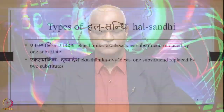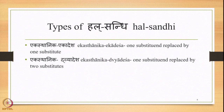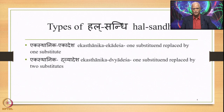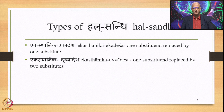Hal Sandhi is a Sandhi that comes in place of a Hal, and Hal is a Consonant. We classified Hal Sandhi into two broad classes: Ekasthanika Ekadesha and Ekasthanika Dvyadesha. Ekasthanika Ekadesha is one substitute replaced by one substitute, whereas Ekasthanika Dvyadesha is one substitute replaced by two substitutes.